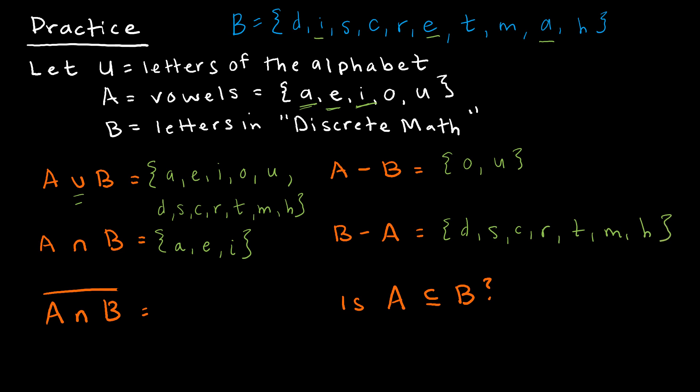My next question says the complement of the intersection of A and B. And so remember the U is the universe of all of the letters of the alphabet. And I'm saying anything that's not in here that is in the alphabet. So my solution there would be B, C, D.